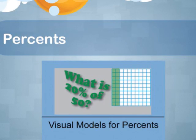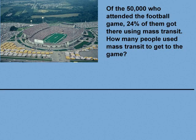Let's start with an example. Of the 50,000 who attended the football game, 24% of them got there using mass transit. How many people used mass transit to get to the game? In this situation, we want to find 24% of 50,000. So this is an example of finding the percent of a number.